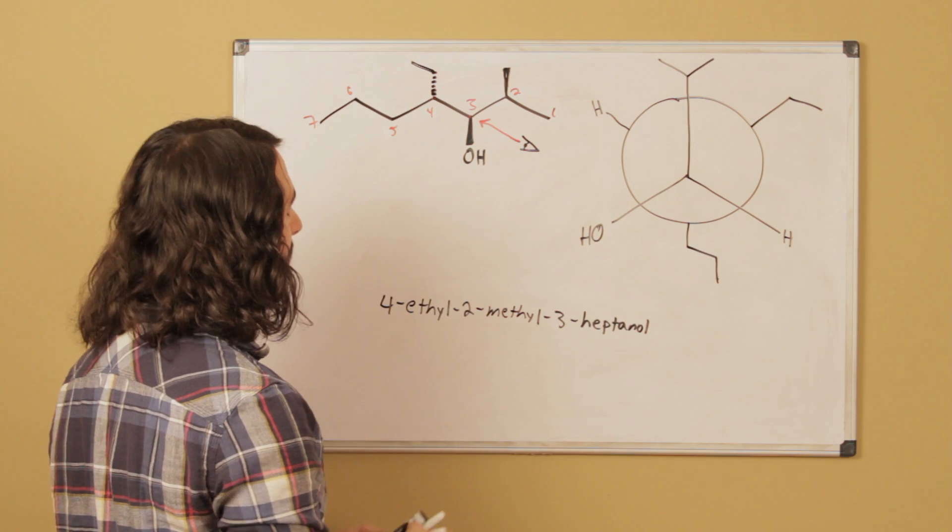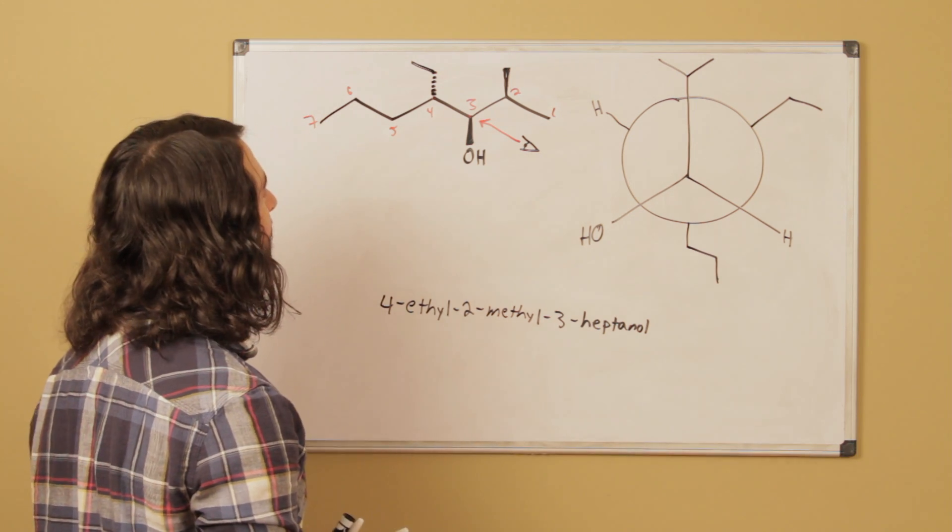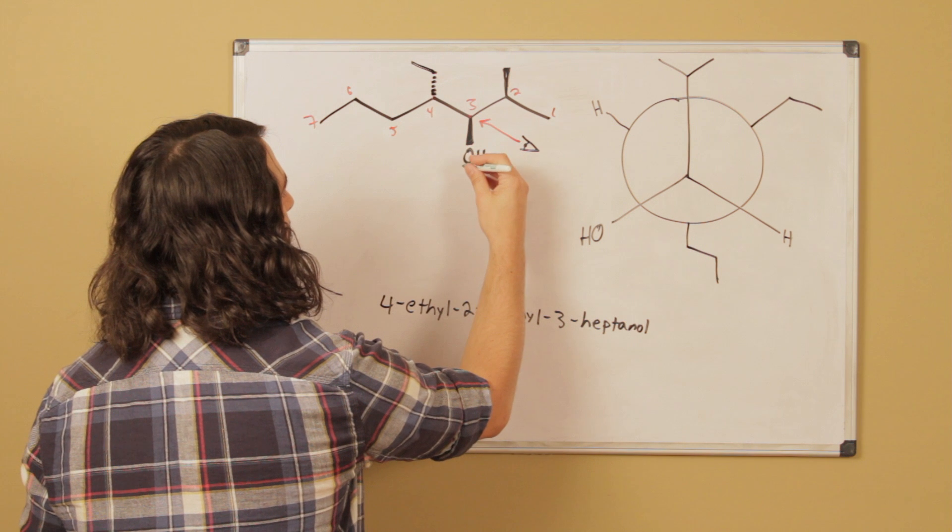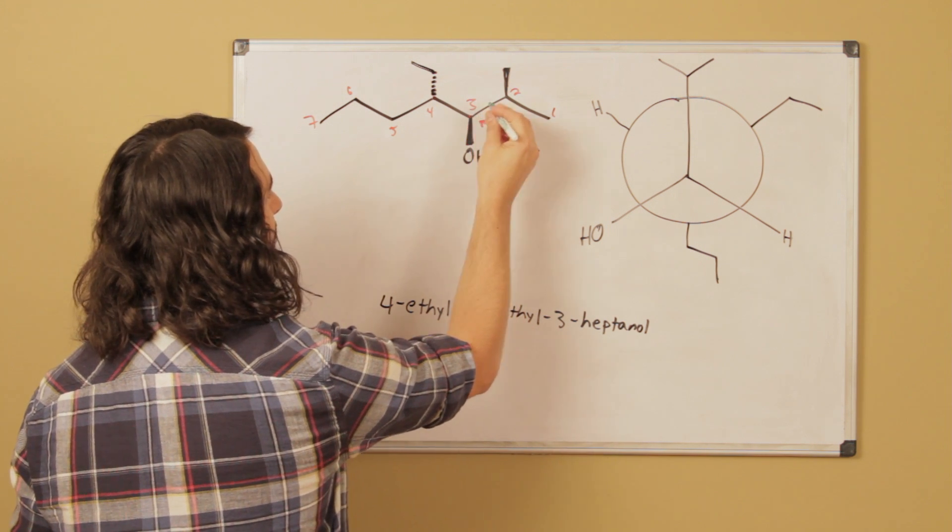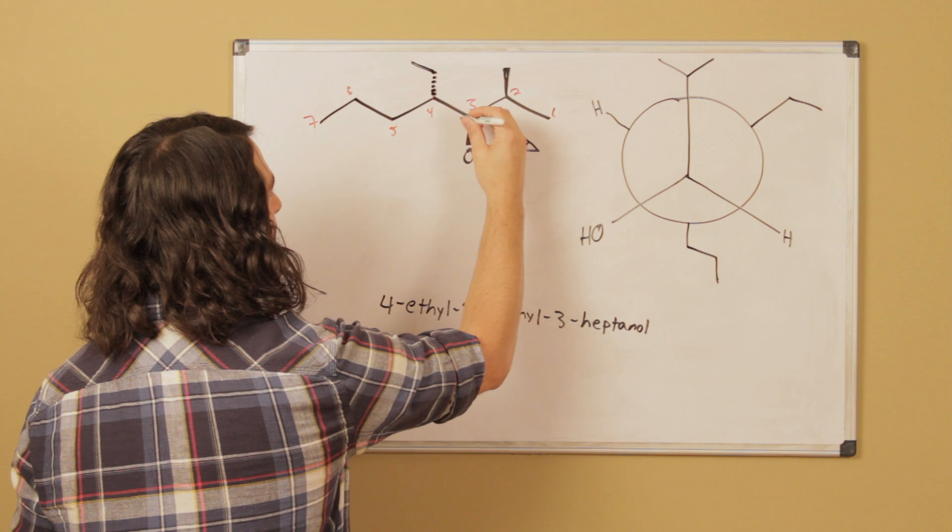Over here though, number 3, we do have a chiral center. And so we want to assess the priority of these groups. And so from here we've got carbon, carbon, implied hydrogen, and oxygen. So let's draw in that implied hydrogen. So the implied hydrogen is clearly number 4, the oxygen is clearly number 1.